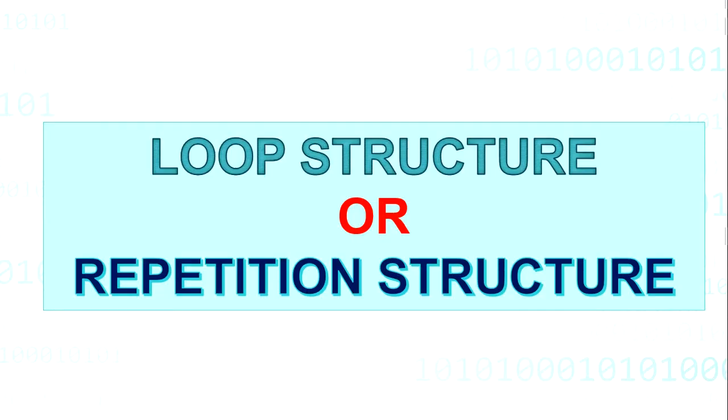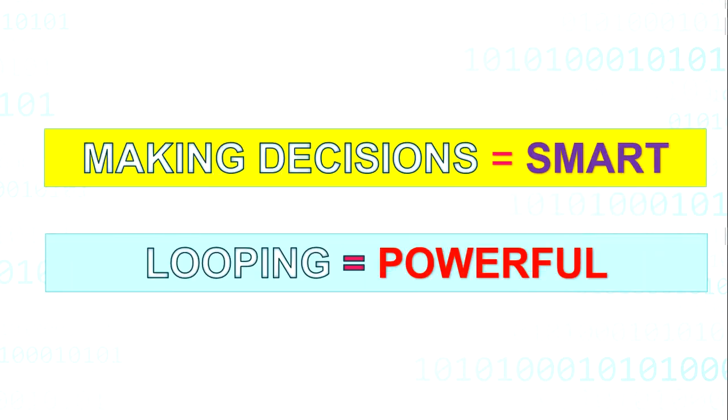Loop structure or repetition structure is one of the three basic structures used in programming. If making decisions is what makes programs seem smart, looping is what makes programs seem powerful. Why? Programmers commonly write code that performs the same task over and over.